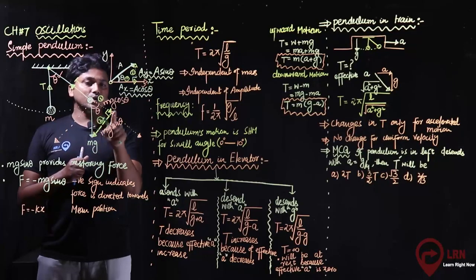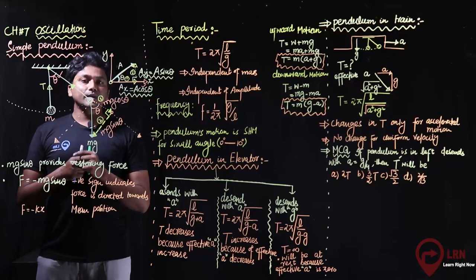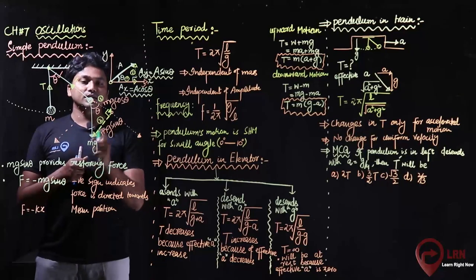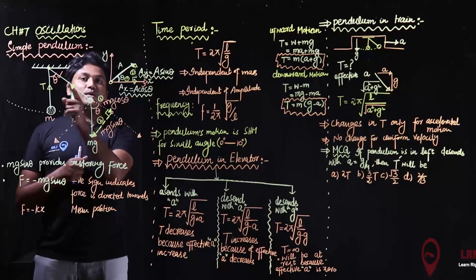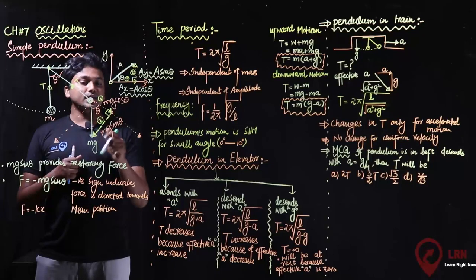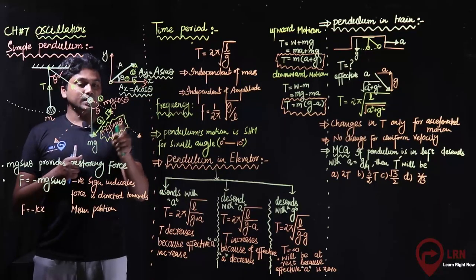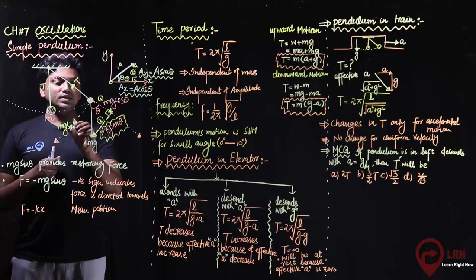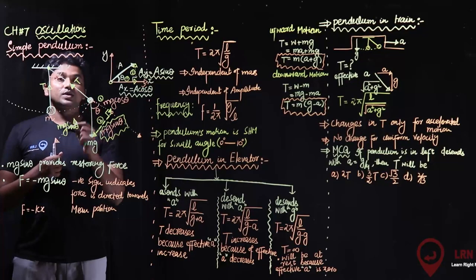Now here we see that the tension and mg cos theta are in opposite directions, so their net effect will be zero — there will be no motion in that direction. The pendulum's motion will only occur along the arc. The only force left is the y-component, which is mg sin theta, and this force acts along the direction of motion.